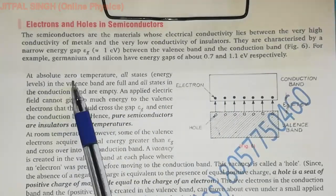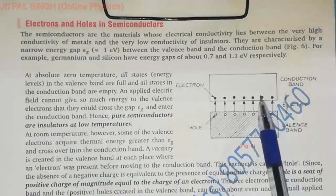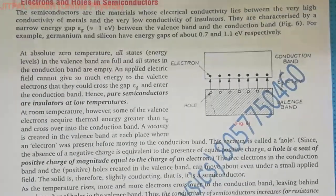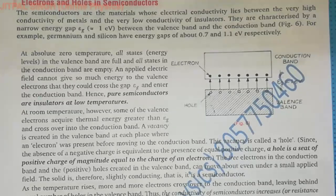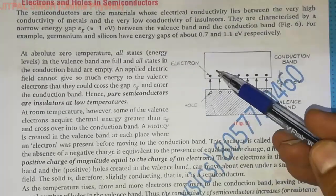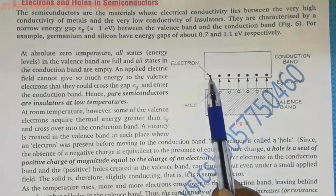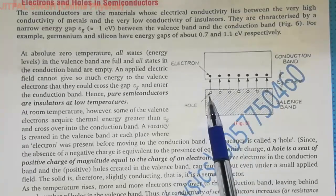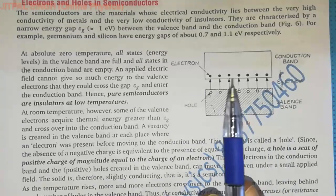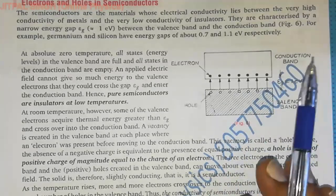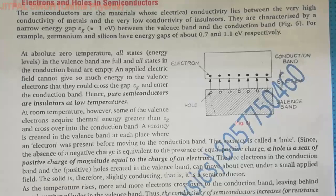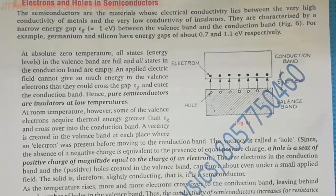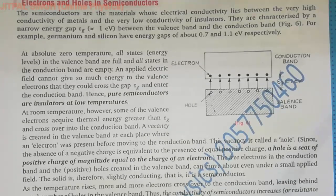At absolute zero, no electron has any energy, so the electrons that had moved to the conduction band return and neutralize the holes. All electrons return and neutralize all the holes. So at absolute zero, no electron or hole is present to conduct — the semiconductor becomes an insulator.